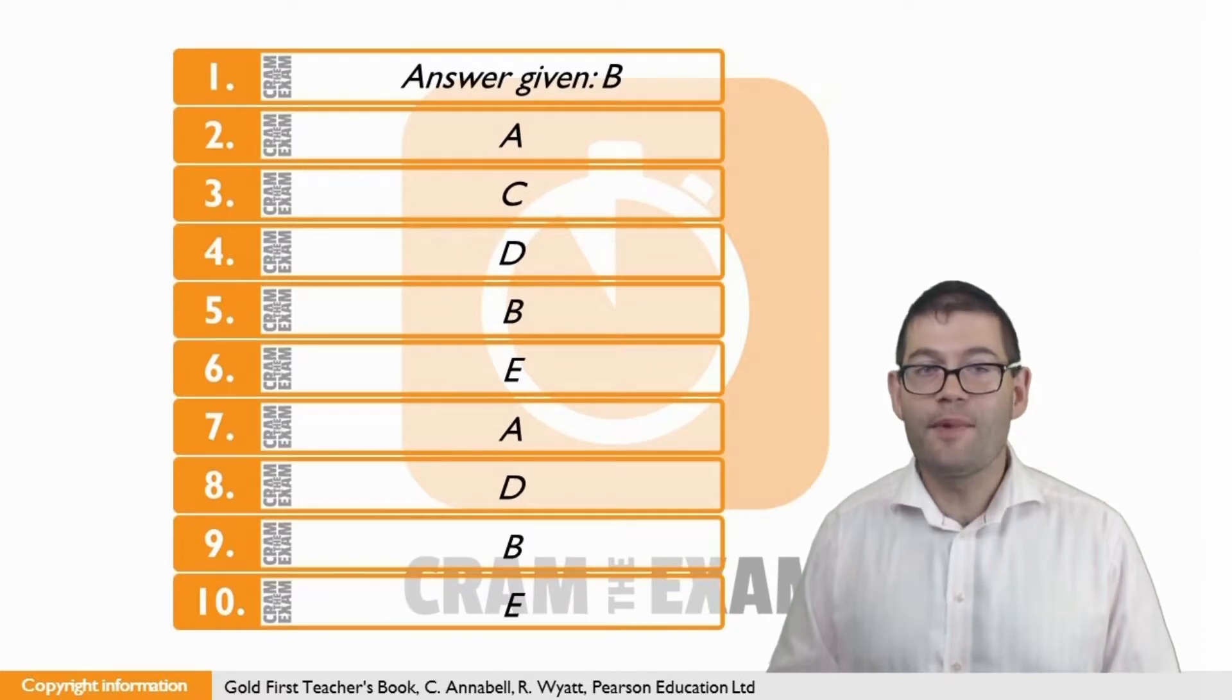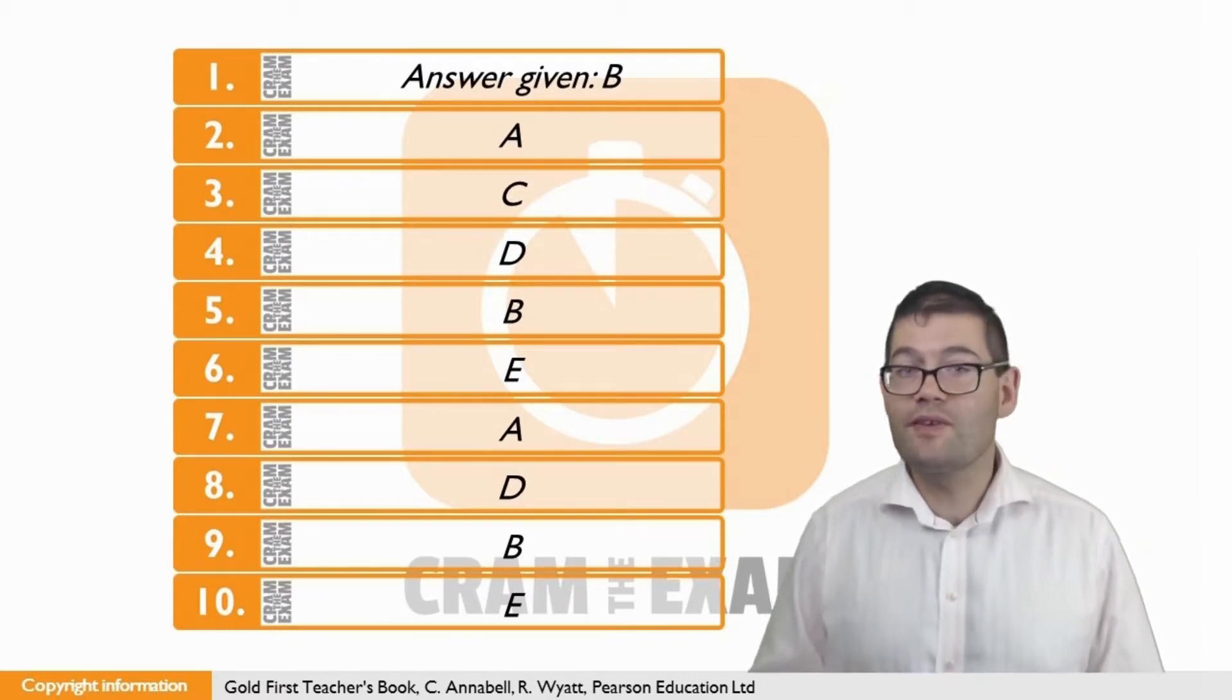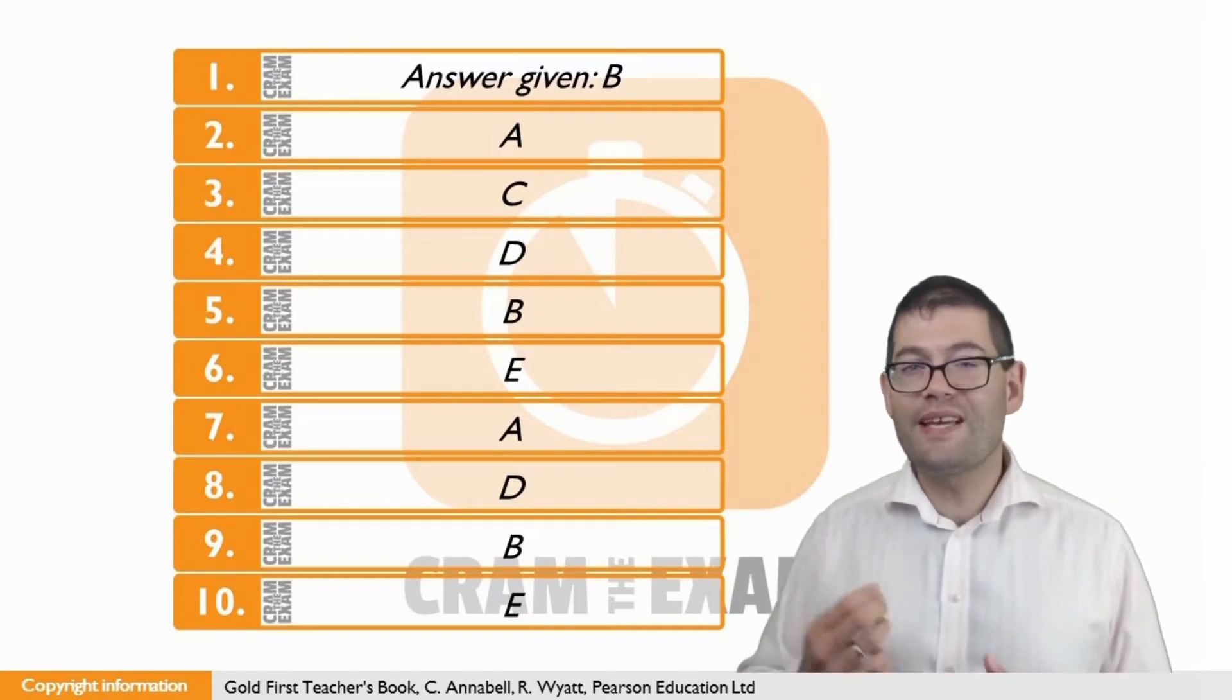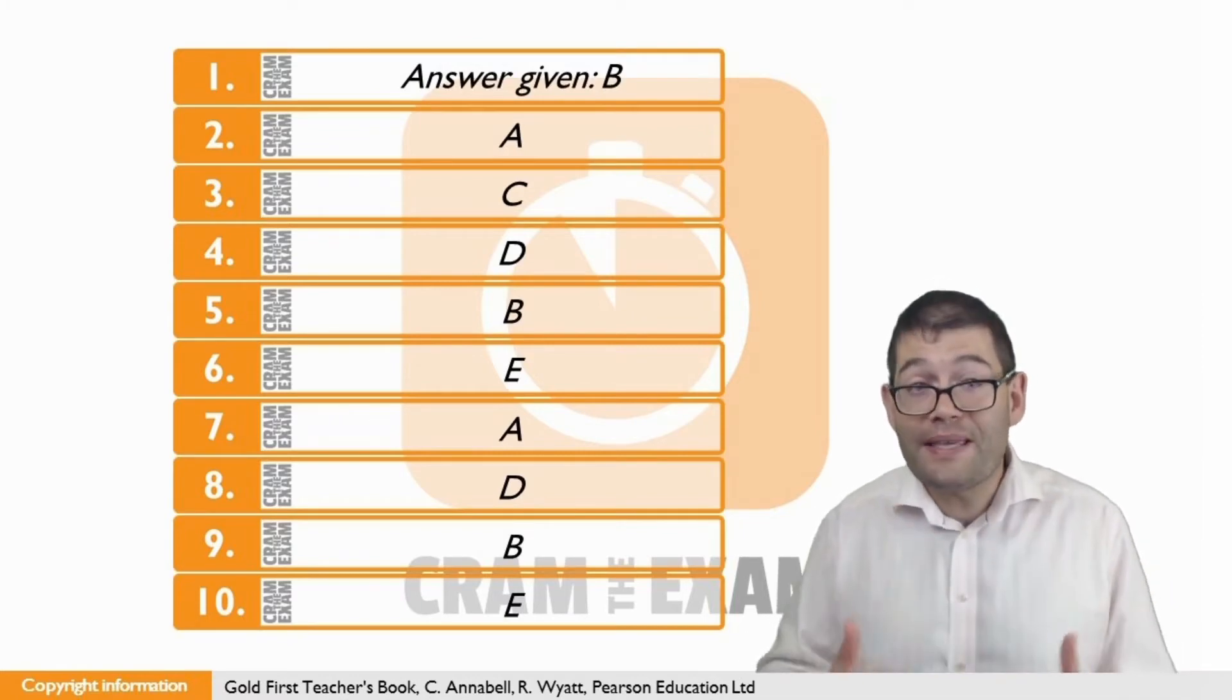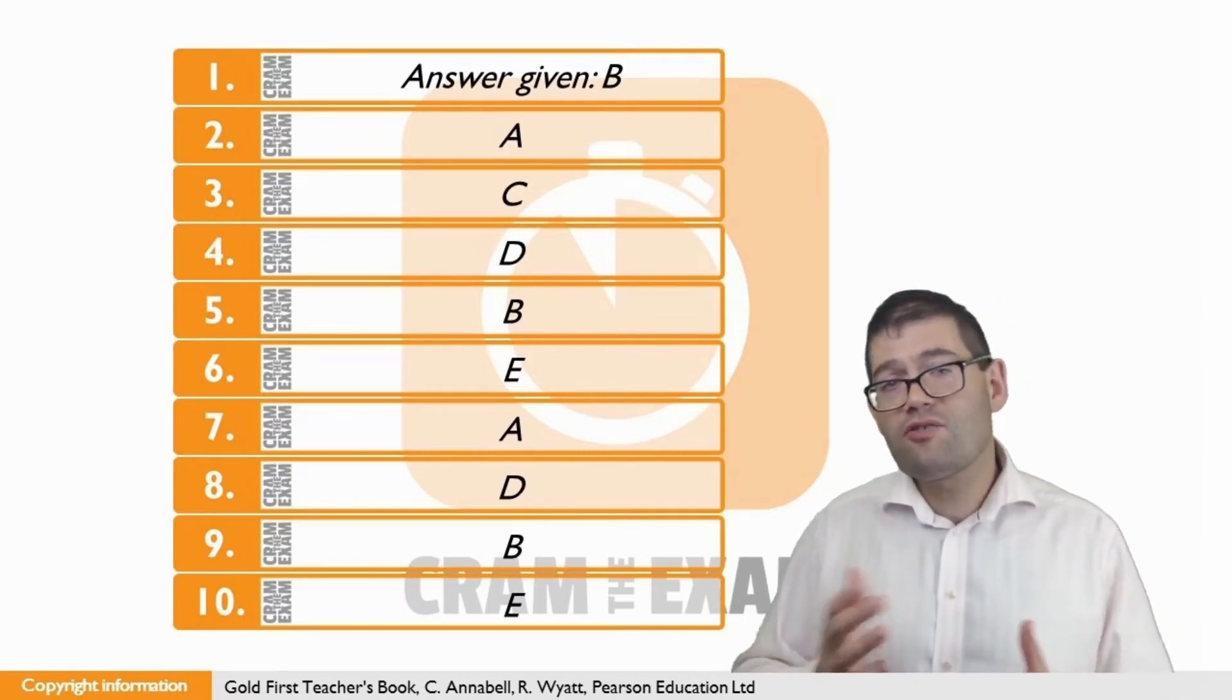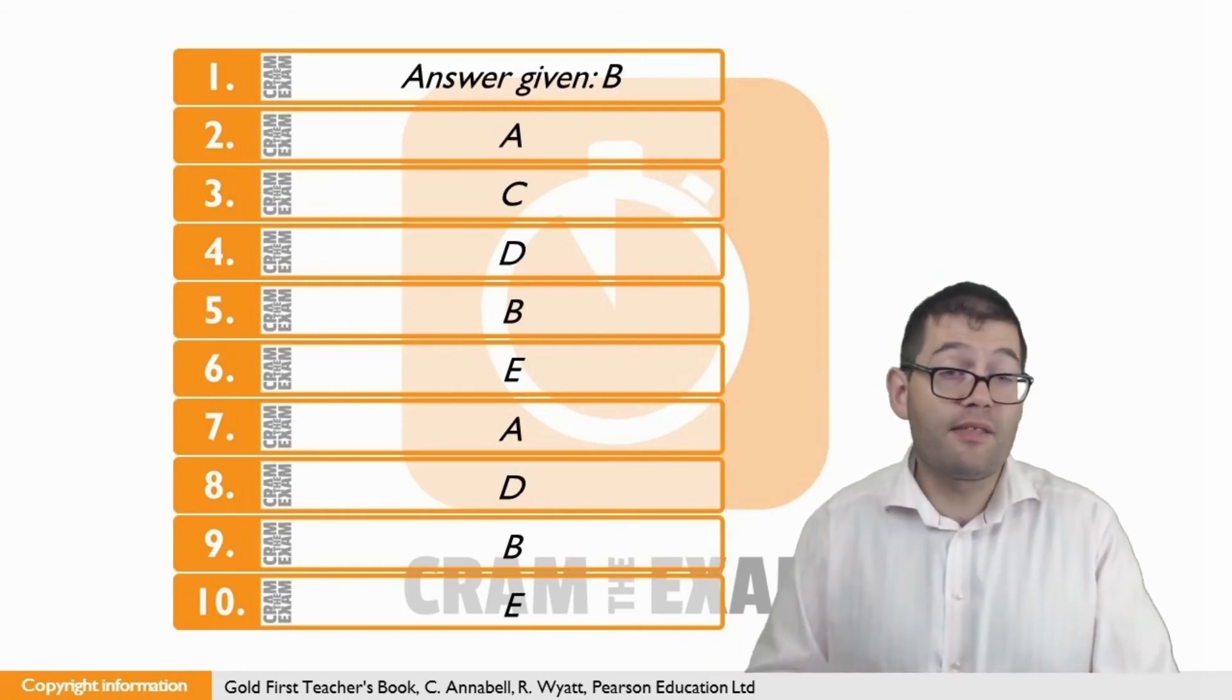For question ten, the answer is E. Phil lives in a very primitive environment. We're looking for something which means the same as primitive, that is, basic or uncomplicated. And we can find it in E with, we have only the basic requirements for survival, which describes primitive pretty well, don't you think?